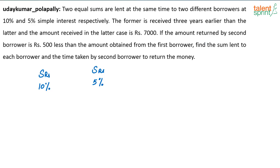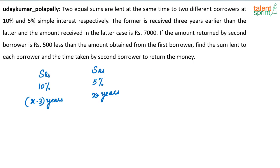The former is received 3 years earlier than the latter. So if I say the second person is returning the amount in X years, the first person is returning the amount in X minus 3 years. The former is received 3 years earlier than the latter, and the amount received in the case of the latter is 7000. So what is the total amount the second person returns? The principal plus interest: S rupees at 5% per annum simple interest for X years.